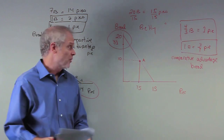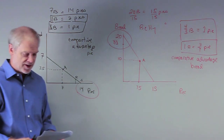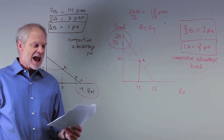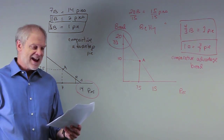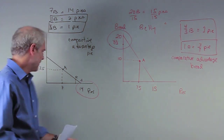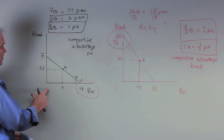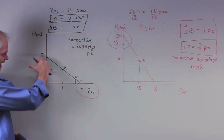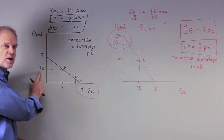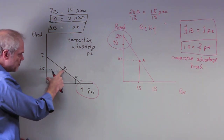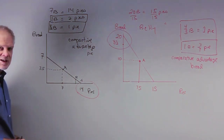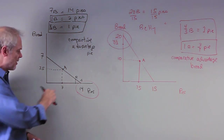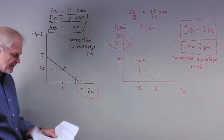It says refer to figure 3-4. Initially, Barney is spending one half of his time making pies and the other half making bread. So Barney's spending half his time making pies, which gives him seven pies, and half his time making bread, which gives him 3.5 breads. That puts Barney right here at point A on his production possibility frontier — 3.5 breads per hour and seven pies per hour.